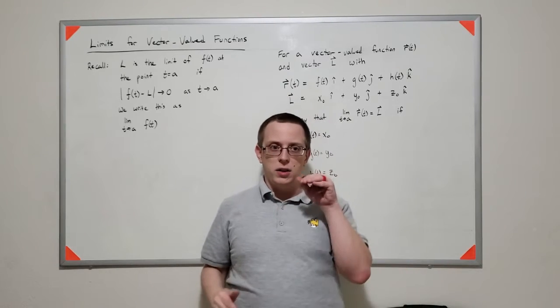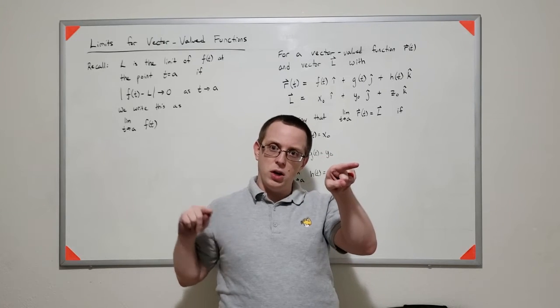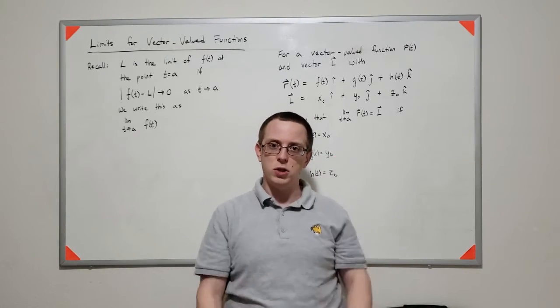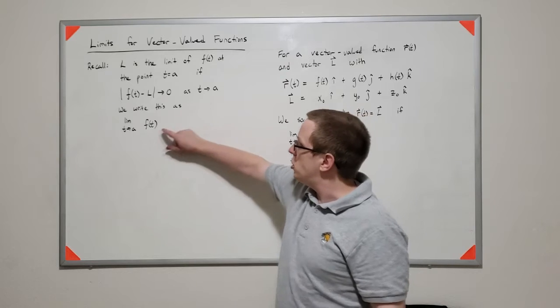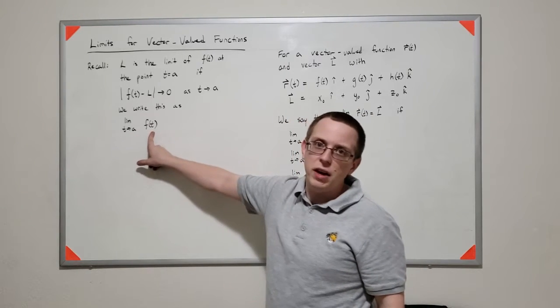So we say that the function value approaches this number as the function output approaches a number as the function input approaches a number. That's the relationship, and we write that as the limit as t approaches a of f of t.